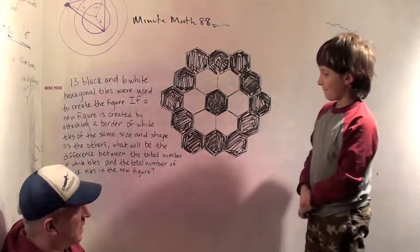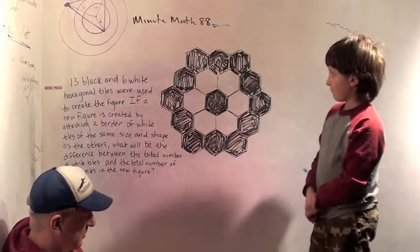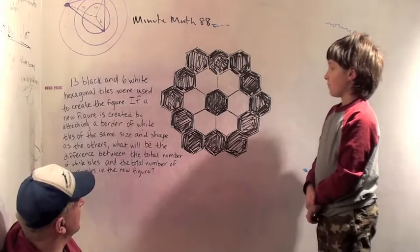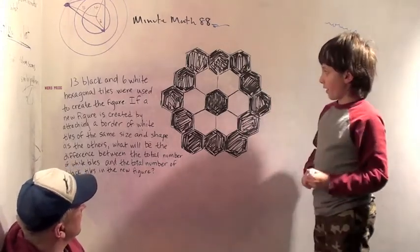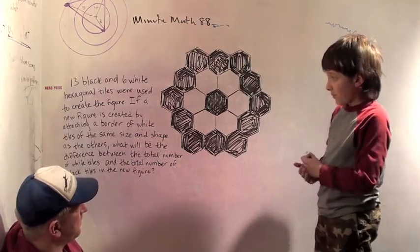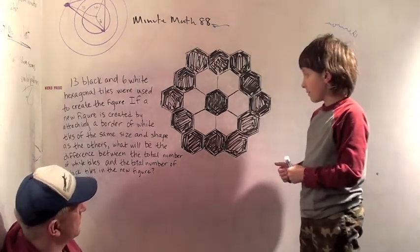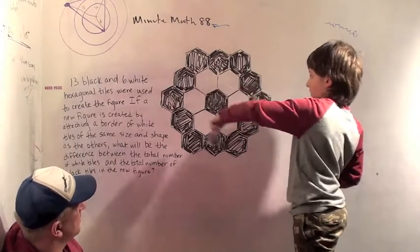How many people got this right? I think only about a quarter of the people got this one right. Although I only looked this afternoon. I forgot to look again. So we need to attach a border of white tiles. Yeah, how many black tiles do we have right now? It says we've got thirteen. Where are they?